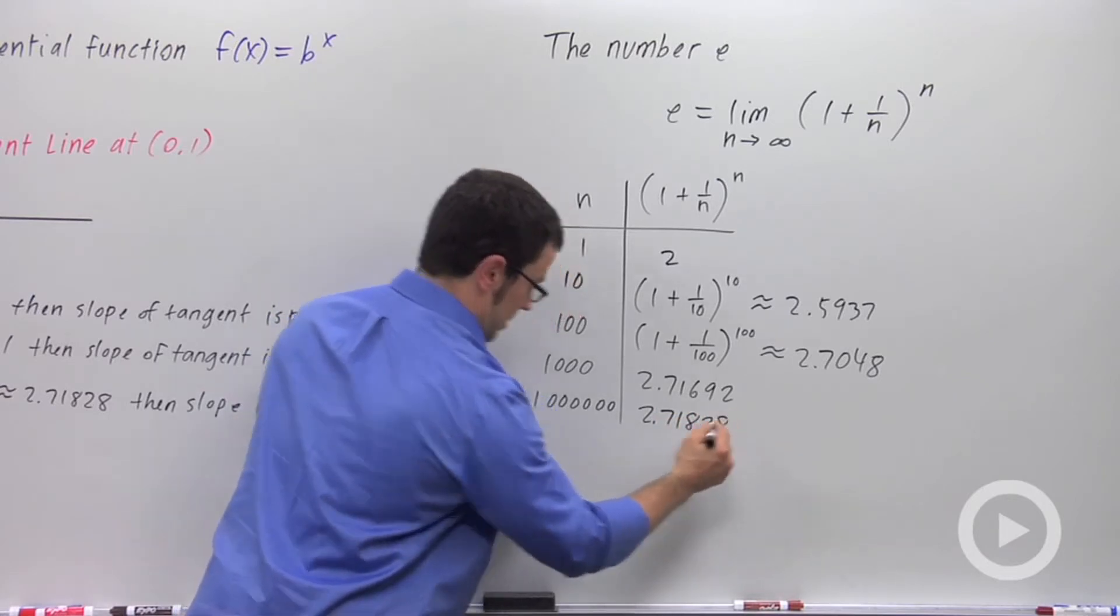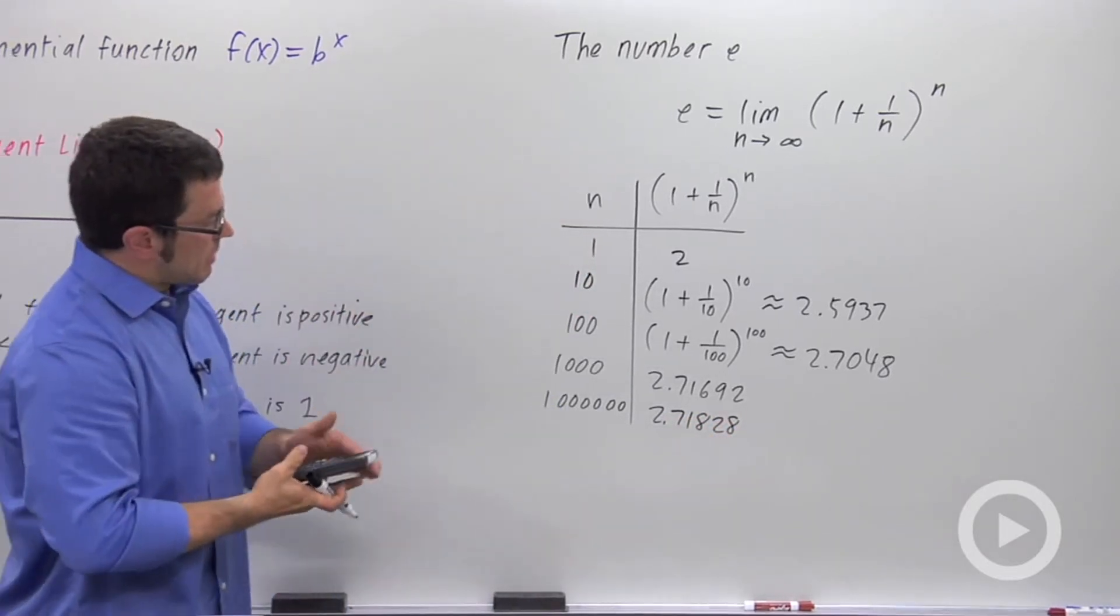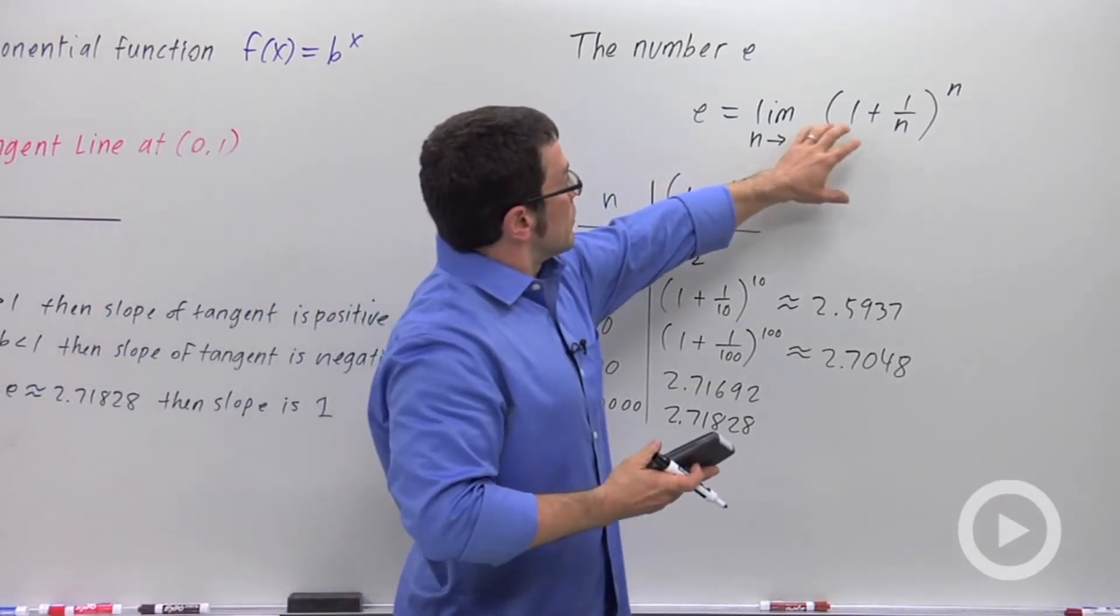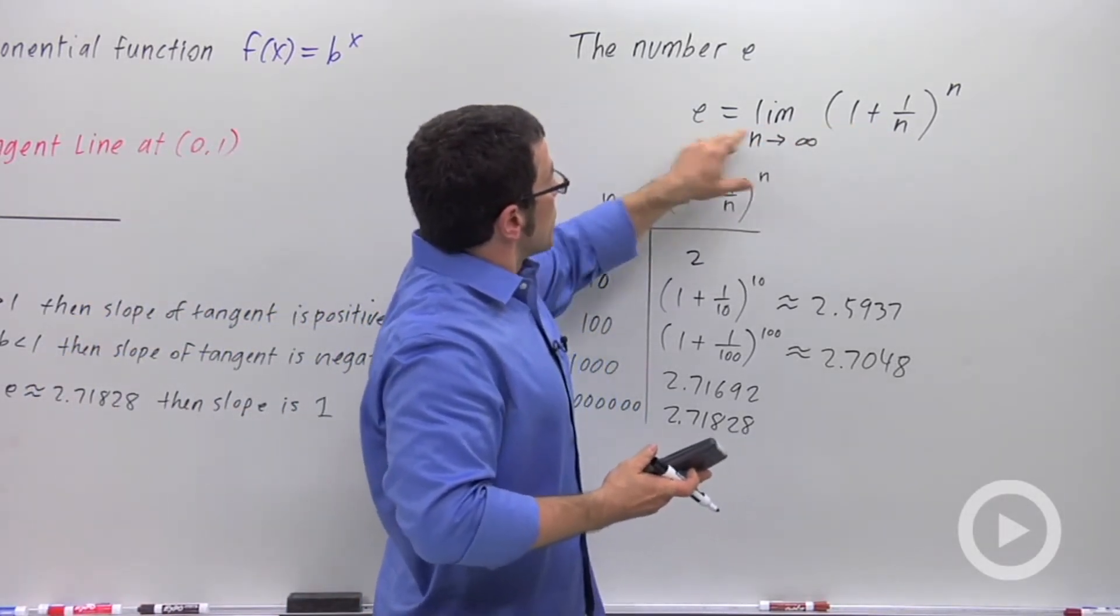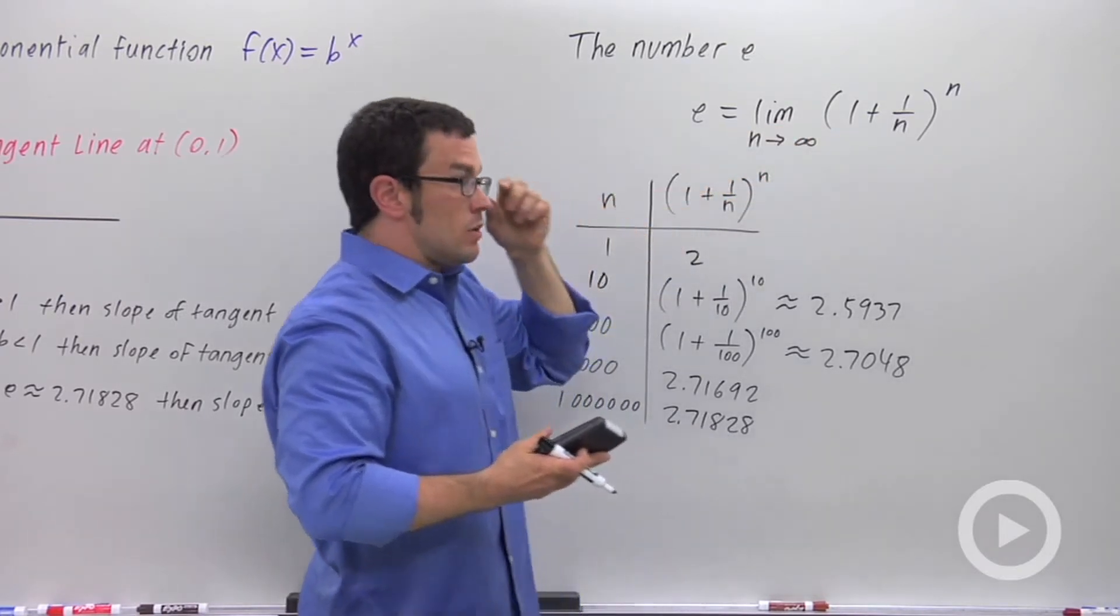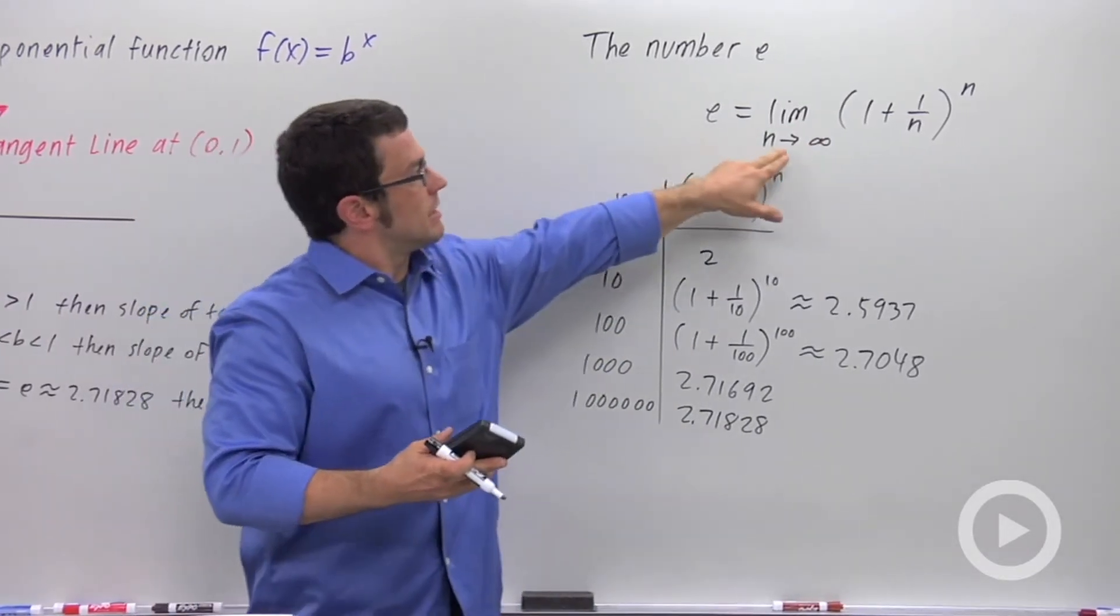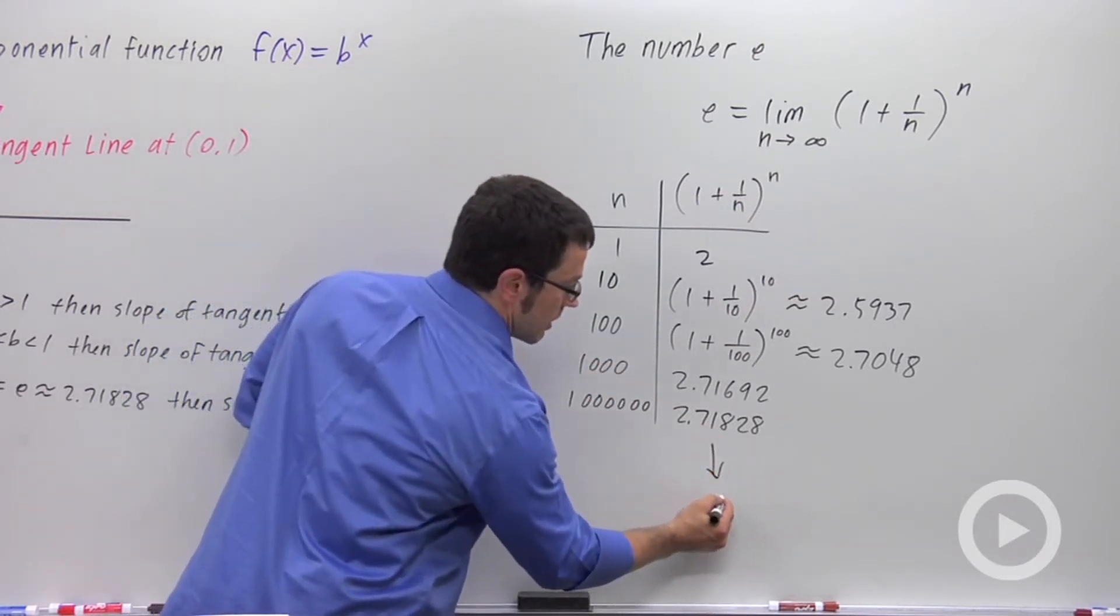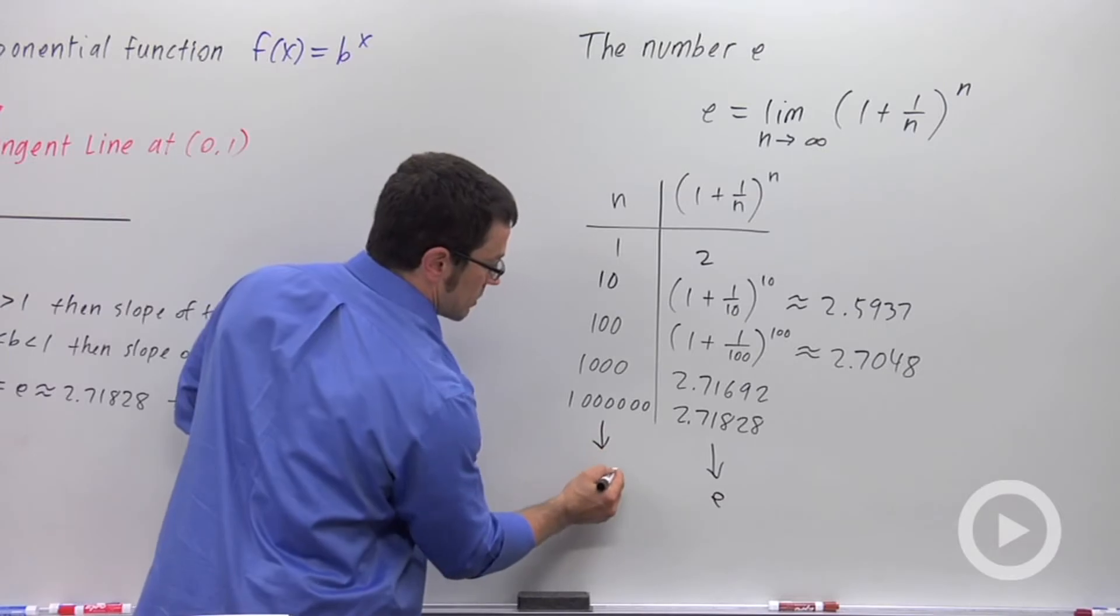2.71828. So you finally get some convergence once you get n out to a million. It takes quite a while for this limit to start getting really close, for this value to start getting really close to e. But remember that e is defined as the limit of this expression. So these values are heading towards e as n goes to infinity.